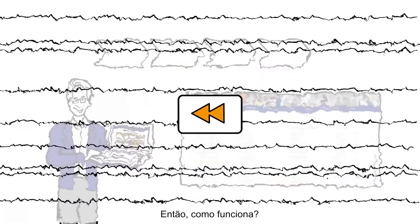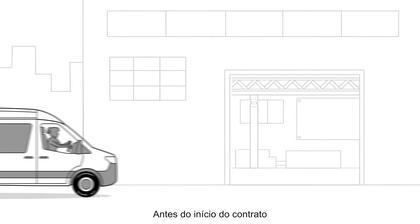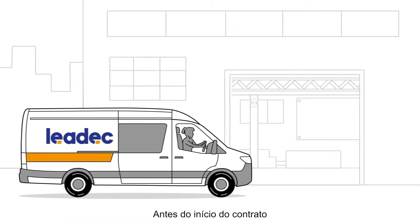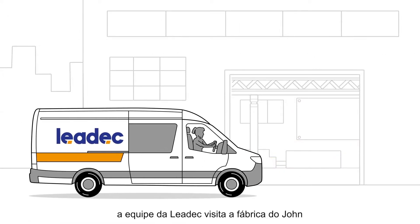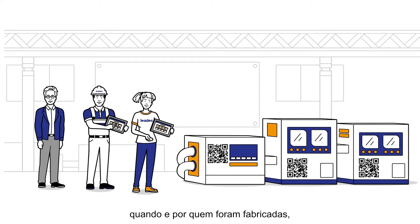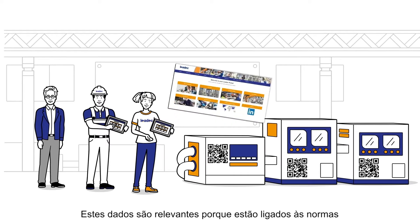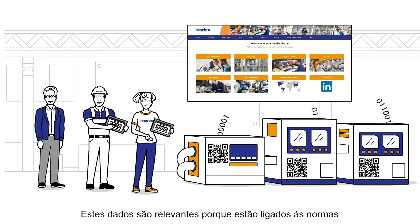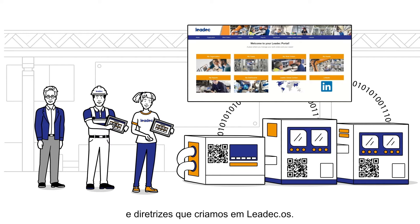So how does it work? Before the contract starts, the Lidec team visit John's factory and carefully examine all the equipment. They record the most important information, such as the number of machines, when and by whom they were manufactured, and any existing defects. These data are relevant because they are linked to the applicable standards and guidelines in Lidec OS.